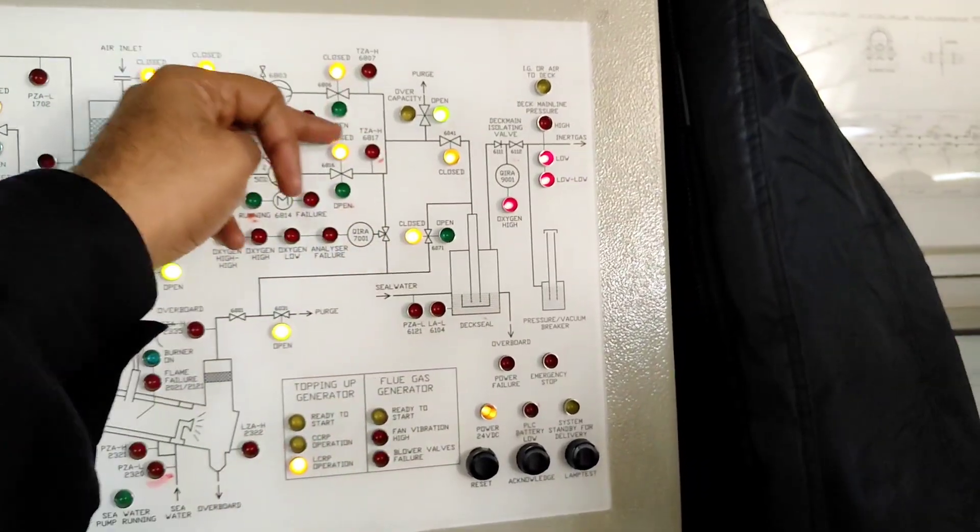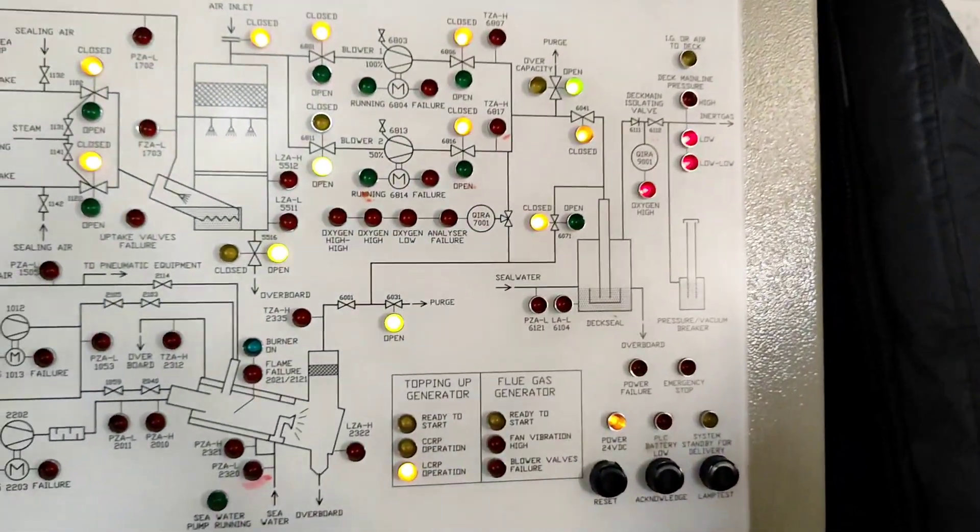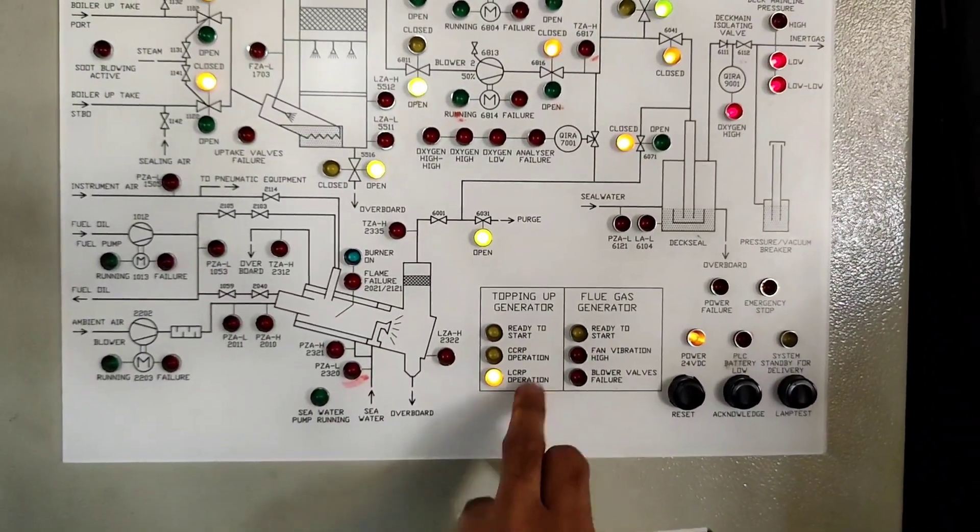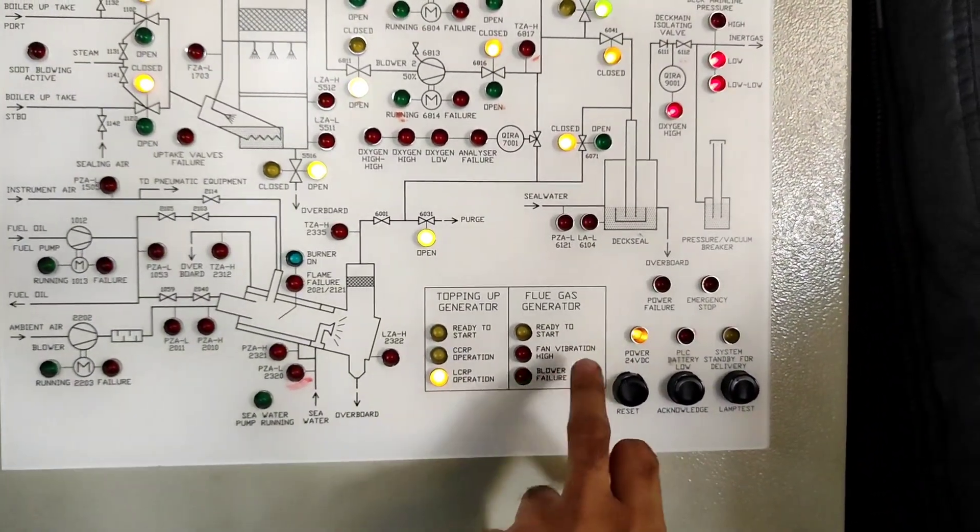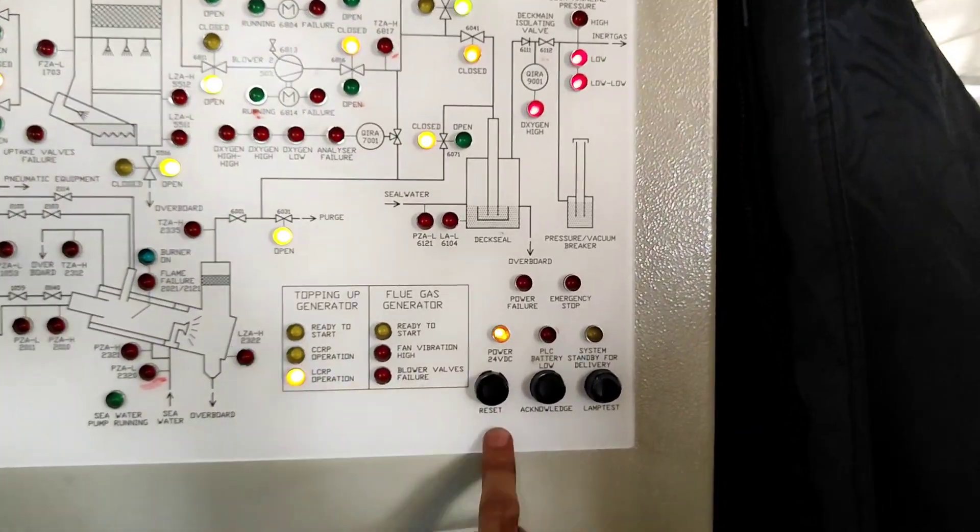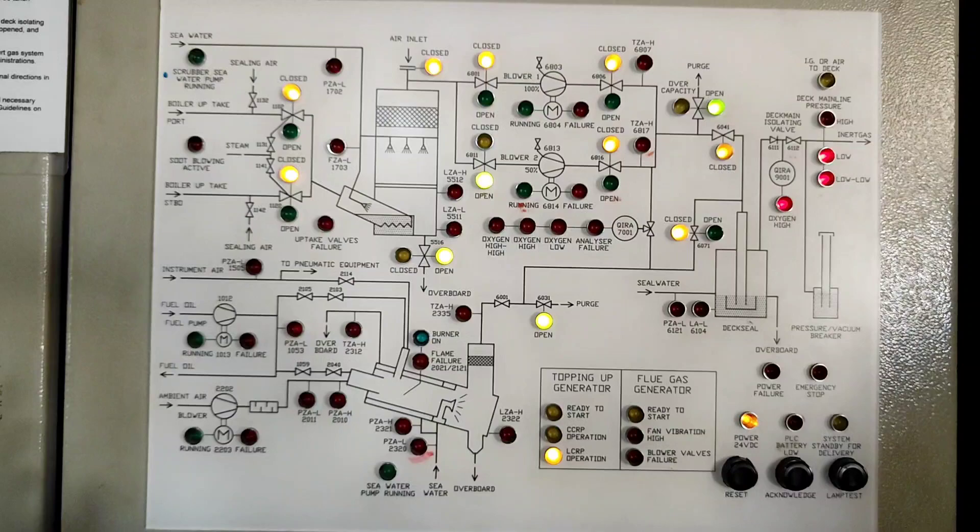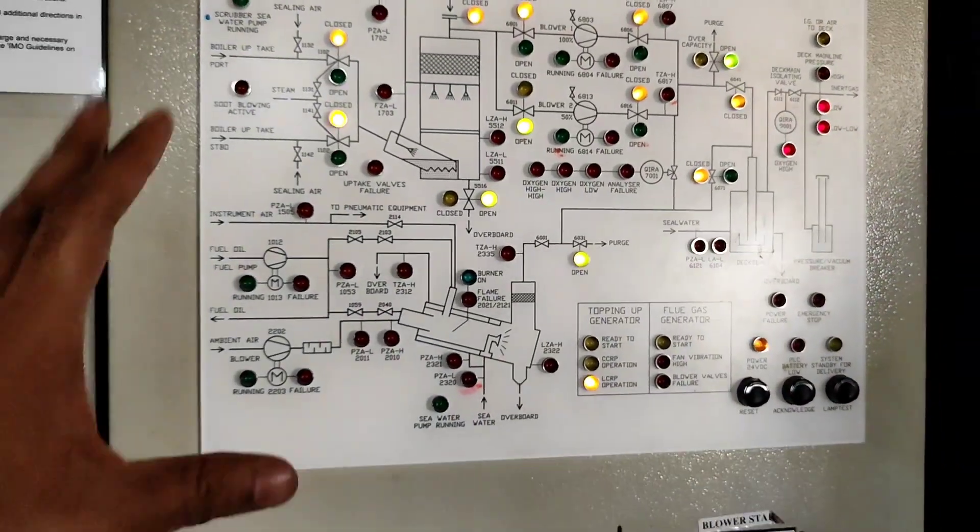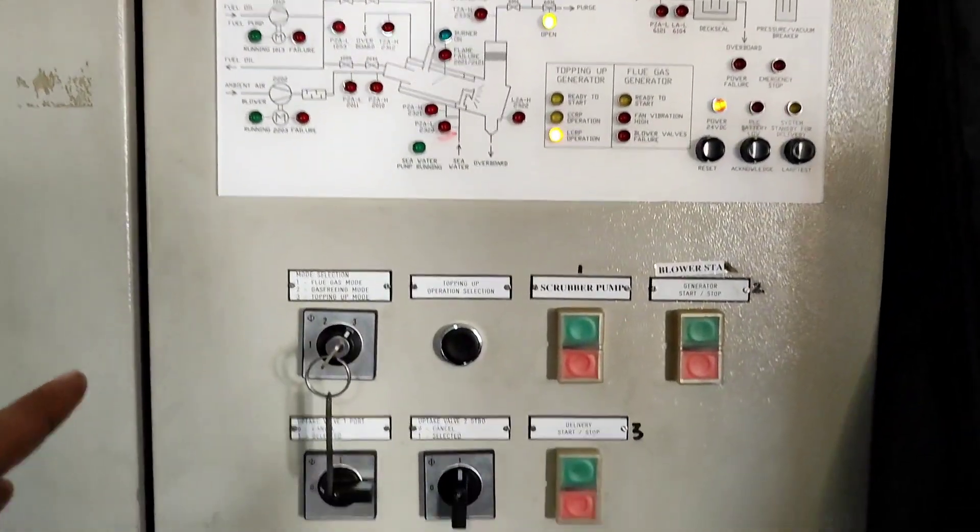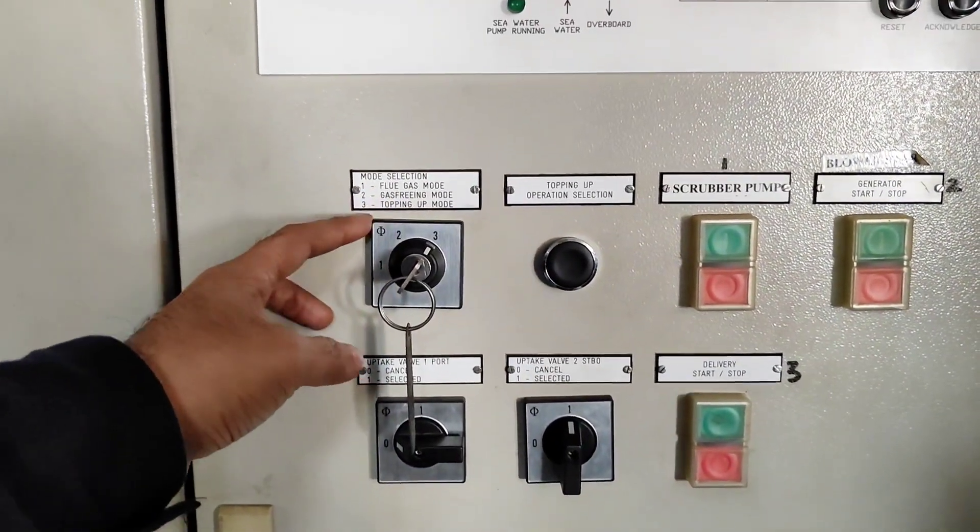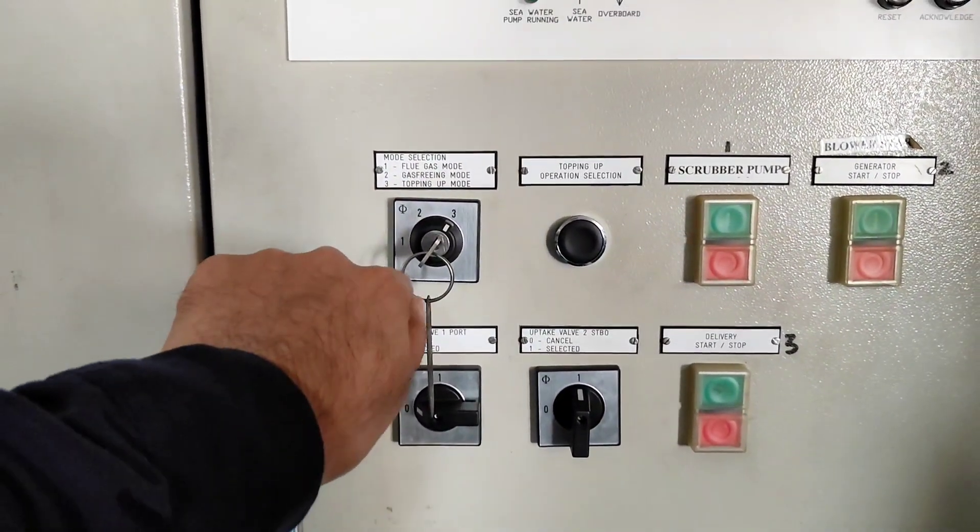So these are the alarms: topping up generator ready to start and flow gas generator, and then this is a reset button, acknowledge, lamp test. This is enough and down you will see mode selection - flow gas mode, gas free mode and topping up mode. So whatever mode you want to select you have to turn the key.